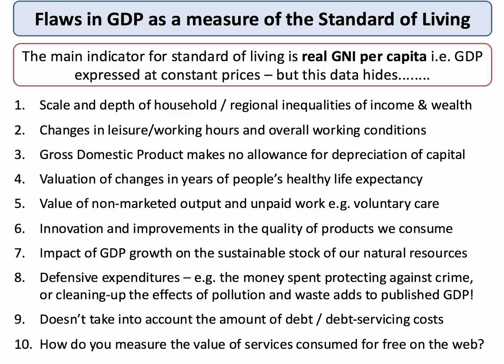Point six is important: the innovation and quality of the products we consume. New goods and services become available because of invention and innovation — products we now take for granted, like the smartphone or the flat screen TV, which wouldn't have been available to the richest person on the planet 30 or 40 years ago. From hip replacements to insulin, to antibiotics, to computers, to safety bags in cars — how do we try to capture the value of innovation in products?